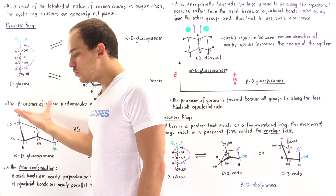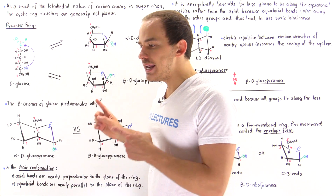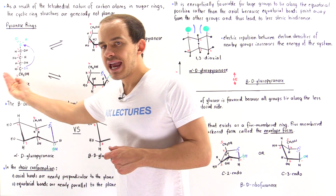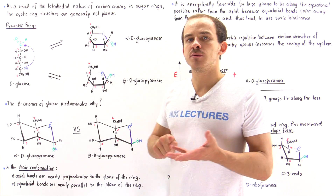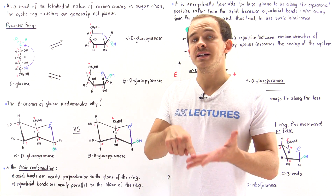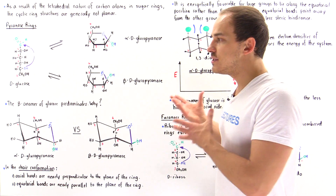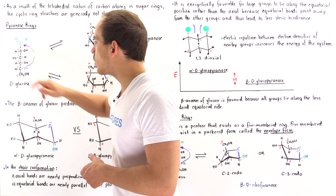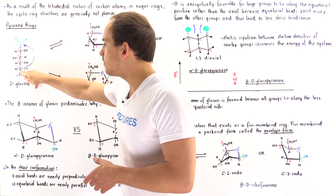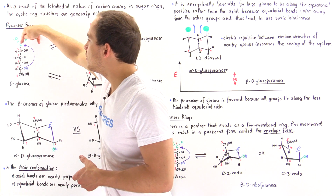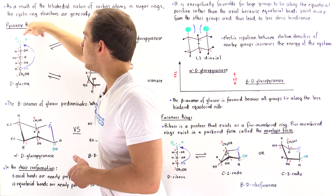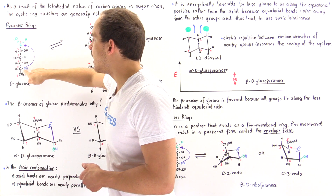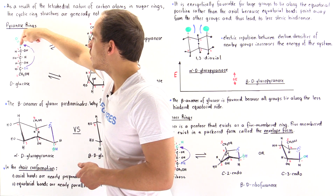So D-glucose will predominate in the cyclic form. Because this is the open chain form, it will have to undergo an intramolecular nucleophilic addition reaction to form the cyclic conformation. What happens is the blue hydroxyl group attached to carbon number five attacks the electrophile of this aldehyde group.